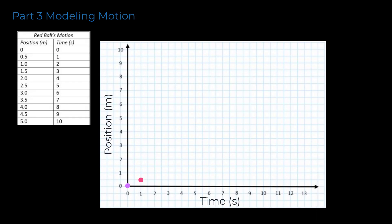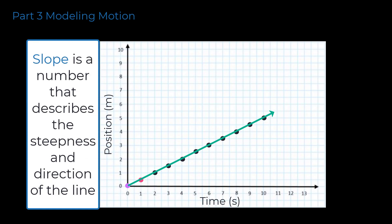Now that you've completed the model of the red ball's motion, take a look at your graph and the shape of the dots. There is a positive linear relationship between the change in position of the red ball and the time spent traveling. The dots make the shape of a line heading in the positive x and positive y direction. This linear relationship is important — since the red ball has a linear relationship between its change in position and time, the slope of the line will indicate an important measurement about the object's motion.